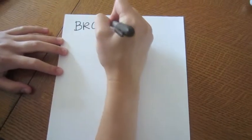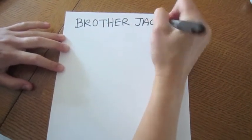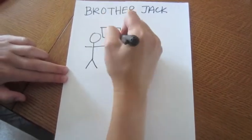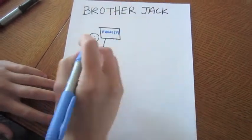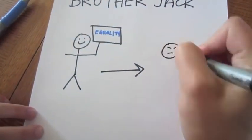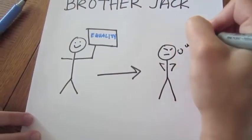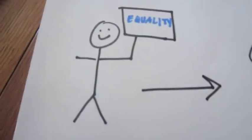Brother Jack is the white and unconditionally loyal leader of the Brotherhood, a political organization that claims to support the rights of the socially oppressed. Although he initially seems kind and dedicated to the goals of the Brotherhood, Jack eventually reveals his racist viewpoints and is unable to see people as anything other than tools.